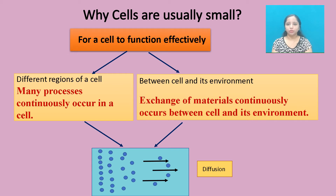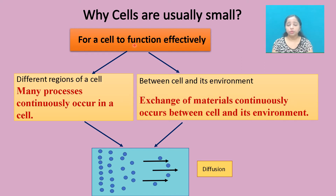Hi there, this is Dr. Kumal, and in this lesson we will talk about why cells are usually small. The most important reason for this is communication. We know that the cell is the basic structural and functional unit of life. For a cell to function effectively, there should be effective communication between different regions of the cell and also between the cell and its environment.